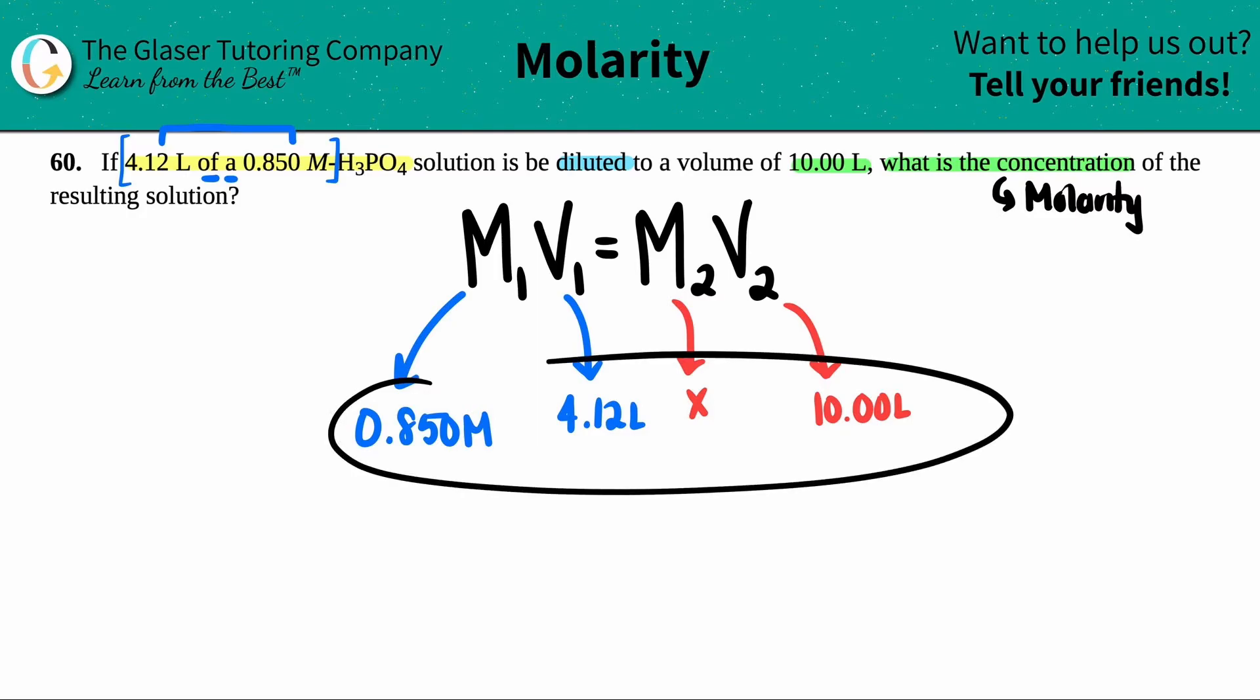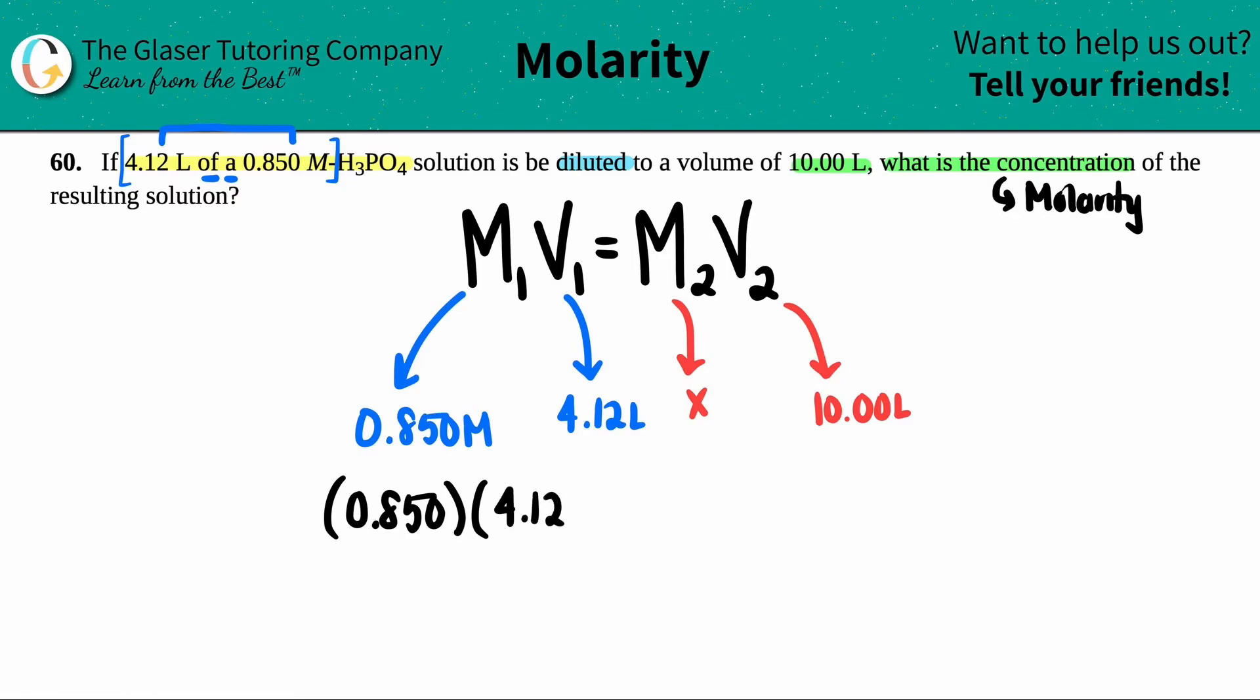So now we have all my numbers. I got an X value here. I'm going to solve. So let's just plug it in. 0.850. I'm going to get rid of the units as I do my math, because I know that this value is a molarity value. So I already know what the units are going to be. So this is X times 10. Okay. And then now all I got to do is I just got to solve for X. So I just divide by the 10.00, and I got to do that to both sides.